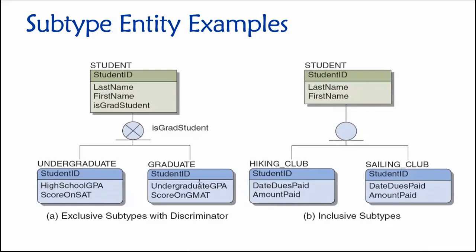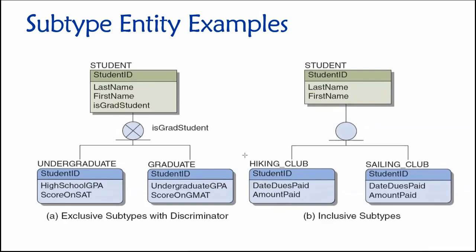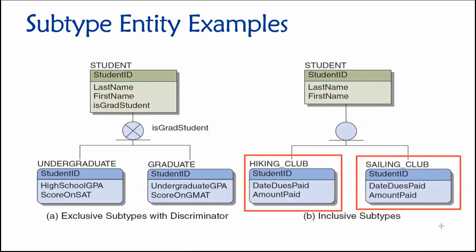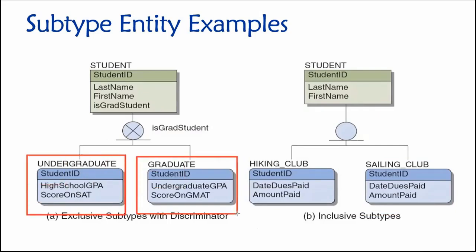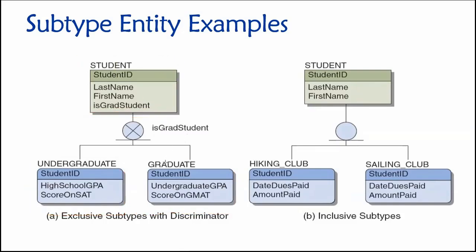The difference is simply: is an instance of the supertype allowed to participate in more than one subtype simultaneously? If the answer is yes, as we see here, it's an inclusive relationship. If the answer is no, as we see over on the exclusive side, it means that each instance of the supertype — student — must be only one of the subtypes at any moment in time.